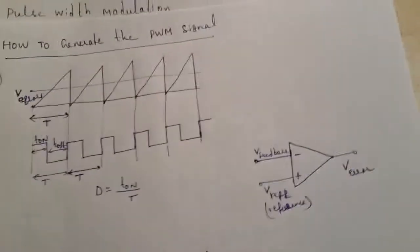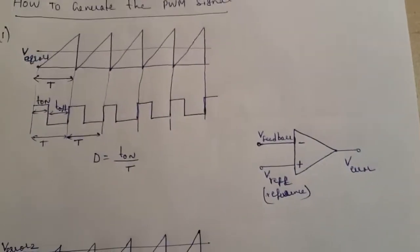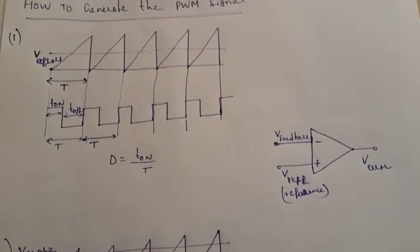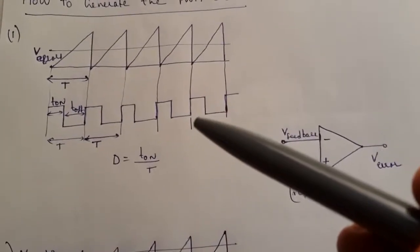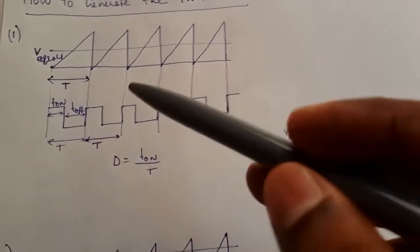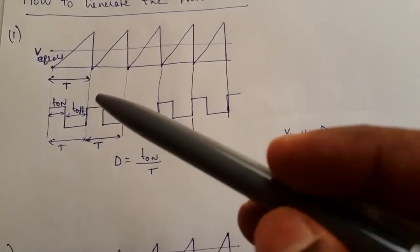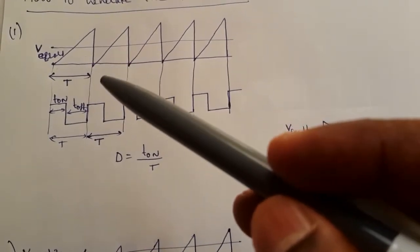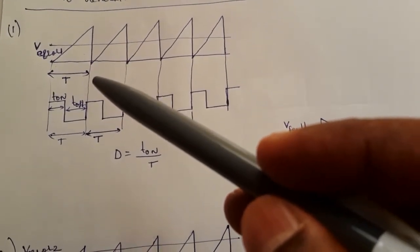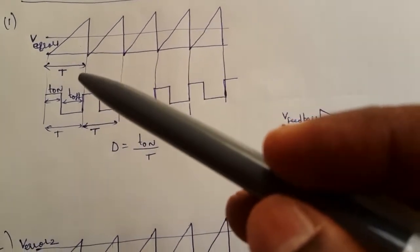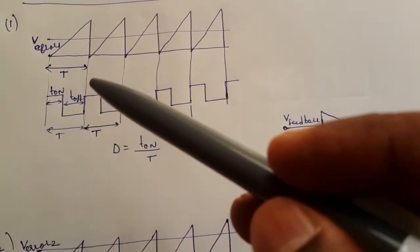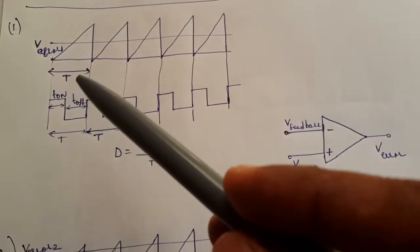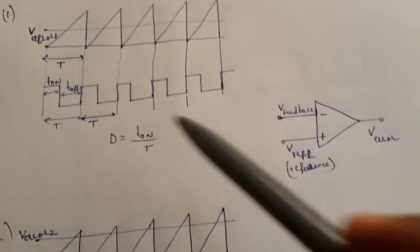Now, how do we generate the pulse width modulation signal? There is a fixed-frequency sawtooth waveform used as the reference signal for the generation of the PWM signal. This sawtooth signal has time period T.